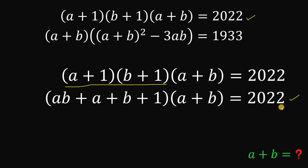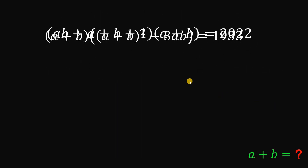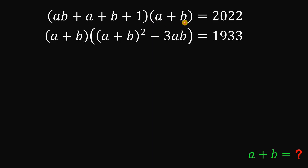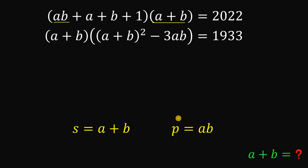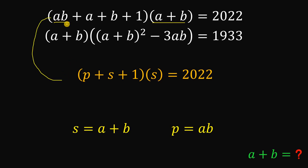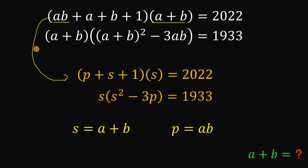Let's replace the first equation with its expanded form. We can see we have the sum of a and b and the product of a and b. So let s = a+b and p = ab. The first equation becomes (p + s + 1)(s) = 2022, and the second equation becomes s(s² - 3p) = 1933.